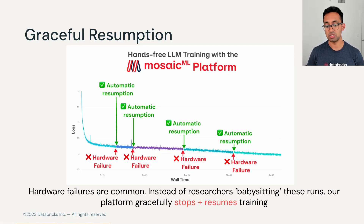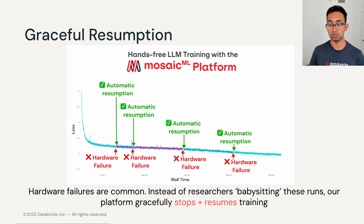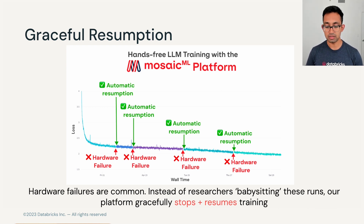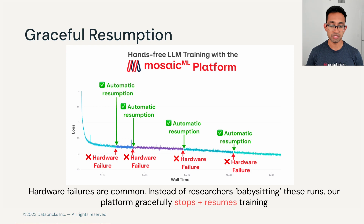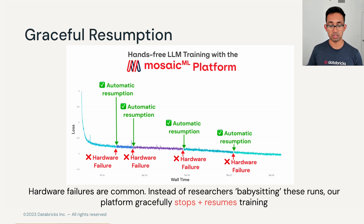The last part of the orchestration stack is resumption. GPU clusters have very common hardware failures — ranging from networking errors to actual hardware failures where you have to remove the whole machine. These occur quite frequently, about once every thousand A100 GPU days. For the MPT 7B run on 512 A100s, we had a failure almost once every two days. Traditionally, researchers would babysit training runs and wake up at 2am to stop and resume them. With our platform, our orchestration tool automatically detects failures, cordons broken machines, and resumes the run — MPT 7B was completed with no human intervention whatsoever.